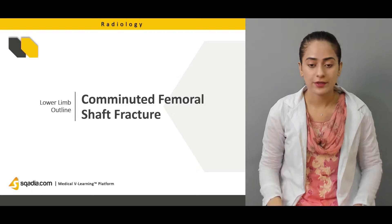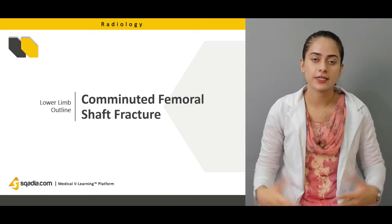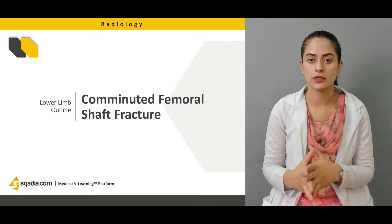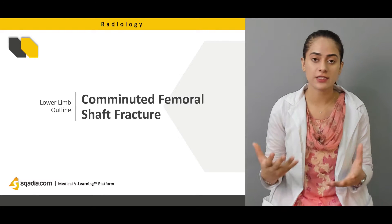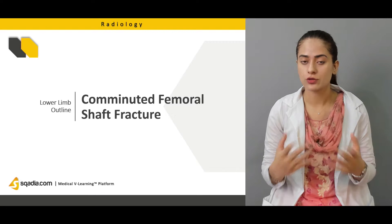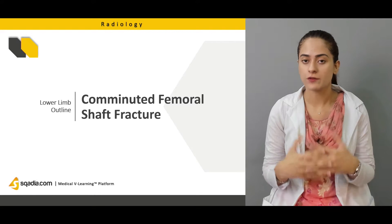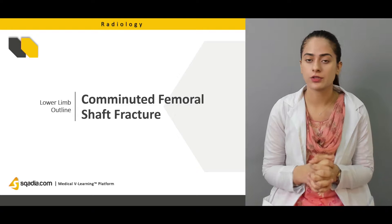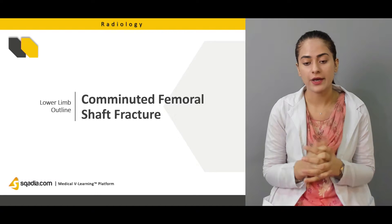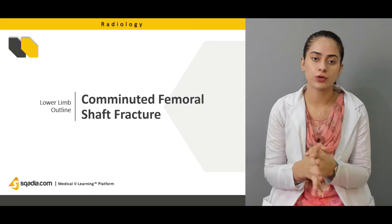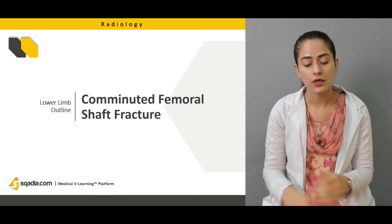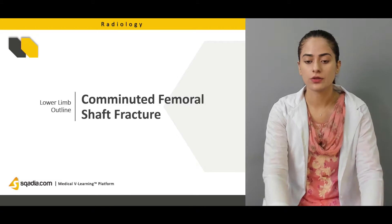Then we're going to talk about comminuted fractures. Because of the excessive pull of different ligaments and tendons at the hip, there's always some displacement of a fragment or the entire bone associated with fractures at the hip. We're going to talk about that specifically — and we're going to see a comminuted fracture of the femoral shaft and how it appears on the radiograph.